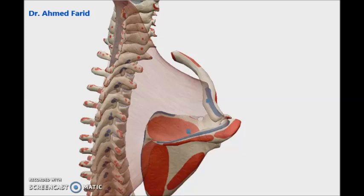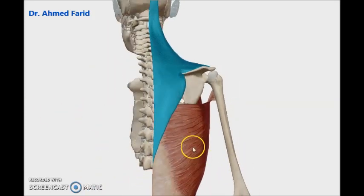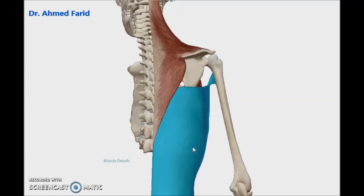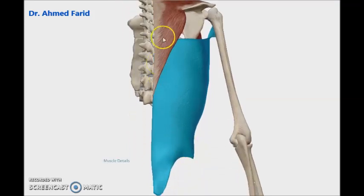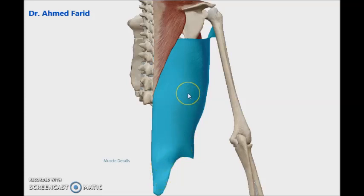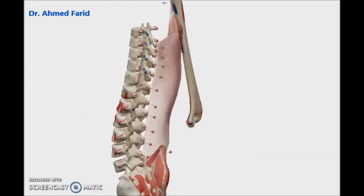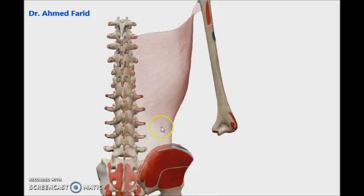Now let's refresh the view to see the other muscle, which is latissimus dorsi. As you see, latissimus dorsi also has a very wide origin: thoracic, lumbar, and pelvic. In detail, latissimus dorsi takes origin from the spines of the lower six thoracic vertebrae, under cover of trapezius.